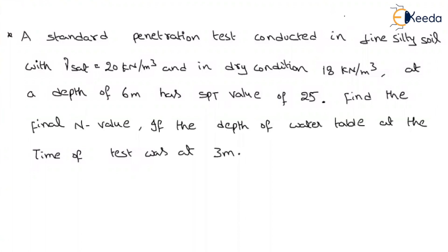They have already counted how much value, a number of blows required for the 300 mm penetration, 25. But still what is meant by a final value? That means we have to see whether any corrections are required or not. Why? Because by reading this problem we can say that the corrections have to be applied. It is conducted on fine silty soil and the water table is present. If there is a water table present, if it is a fine silty soil, then we have to apply some corrections.